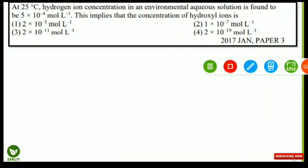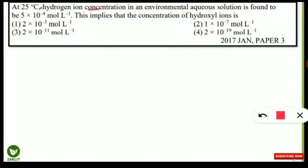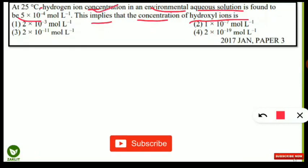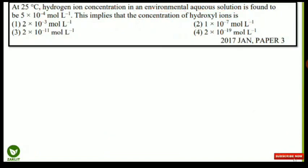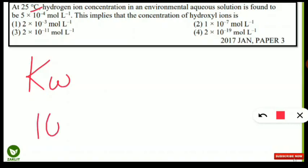The next question asks: at 25°C, the hydrogen ion concentration in an environmental aqueous solution is found to be 5 × 10⁻⁴ mol/L. What will be the hydroxyl ion concentration? This involves the Kw concept. Kw is the ionic product of water, which is constant at a particular temperature. At 25°C, Kw = 10⁻¹⁴.